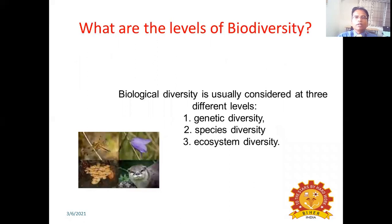What are the different levels of biodiversity? There are three levels of biodiversity. Number one, genetic diversity. Number two, species diversity. Number three, ecosystem diversity.